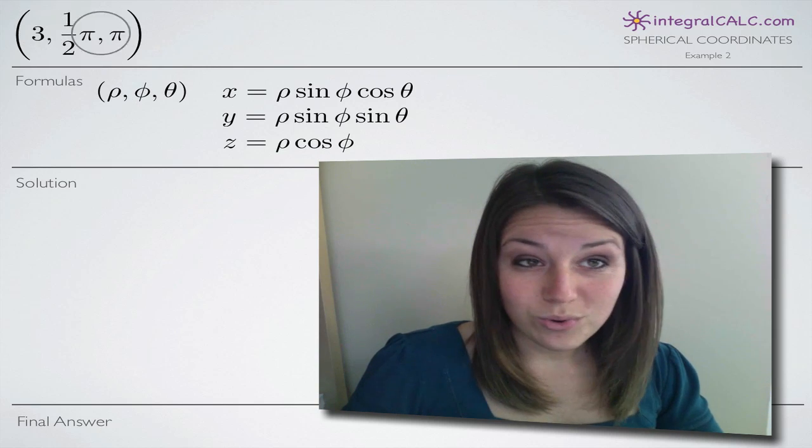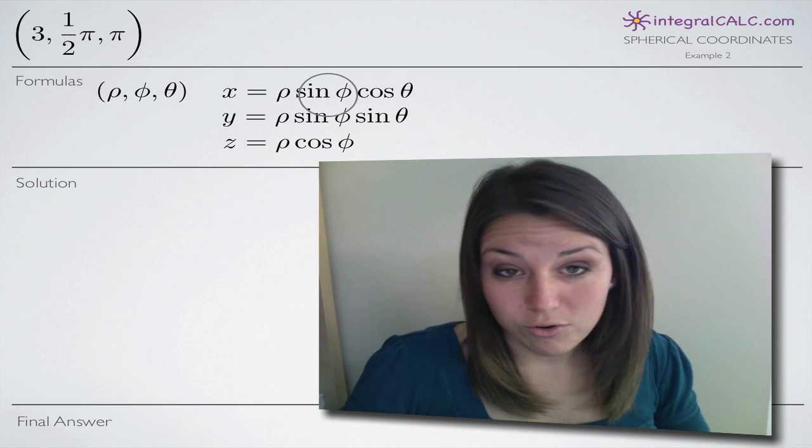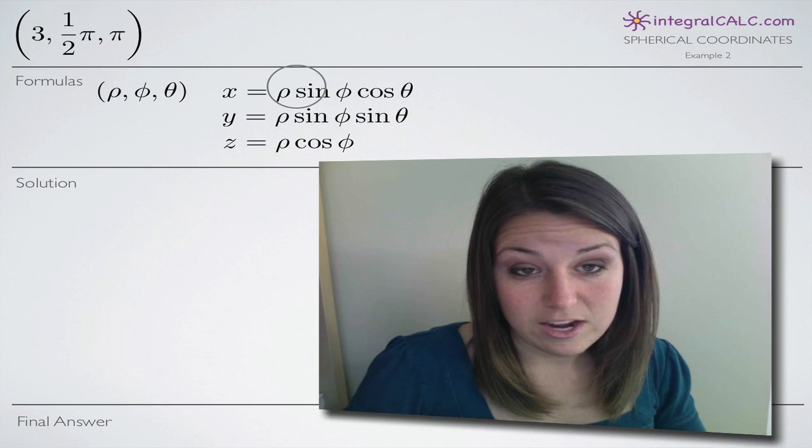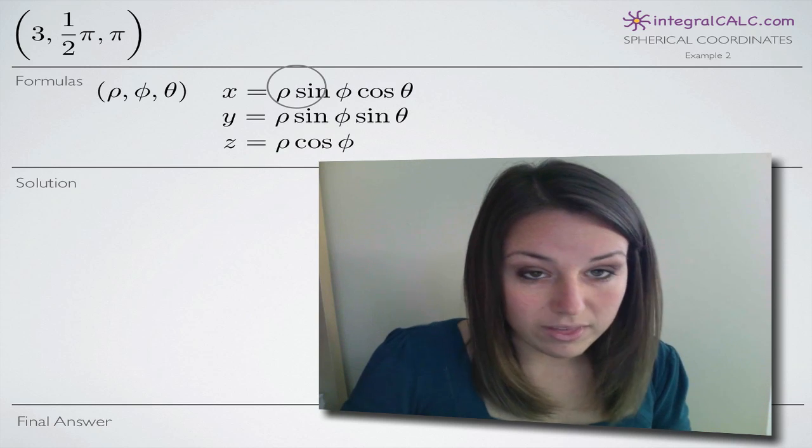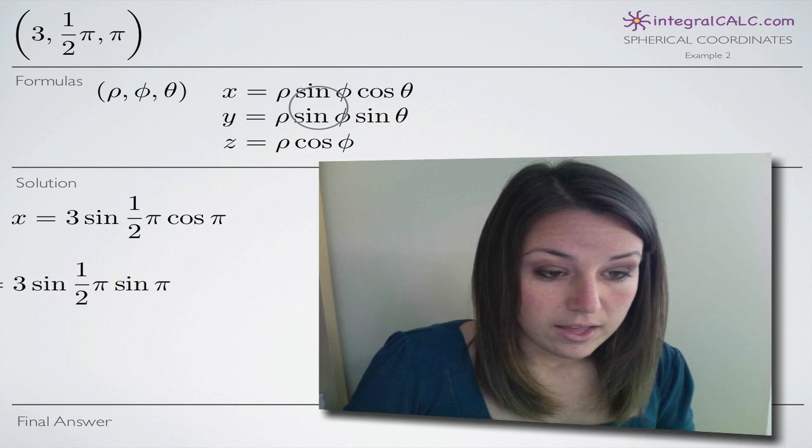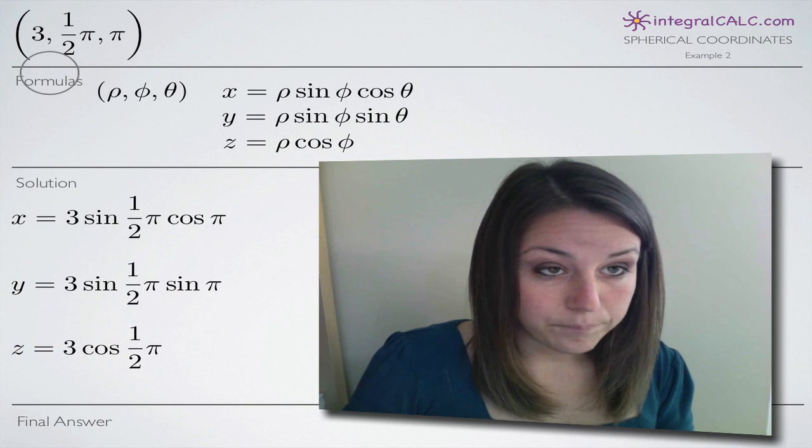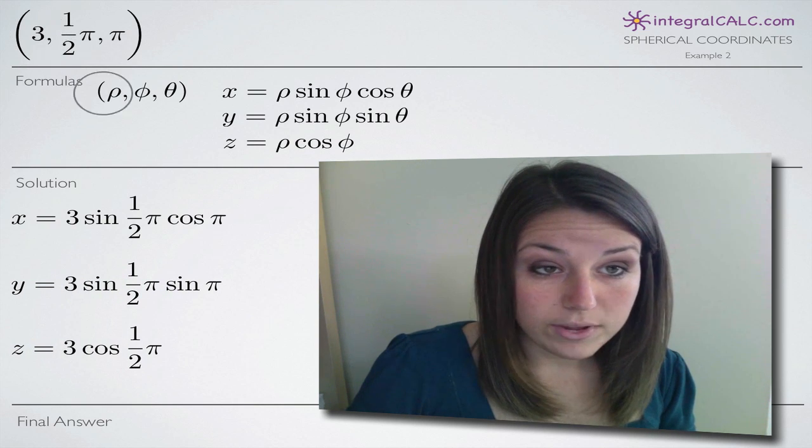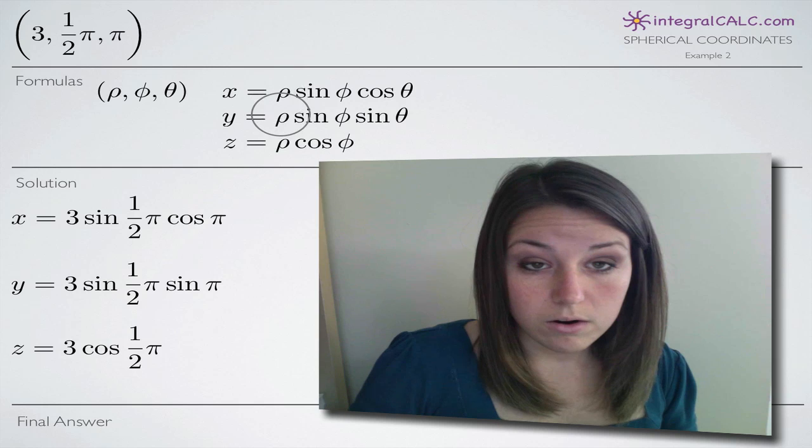And all we have to do is remember which one is which and plug them into the correct spots in our three formulas here. So when we do that, we're going to get three equations for x, y, and z. You can see we're going to plug in 3 for rho, here, here, and here.